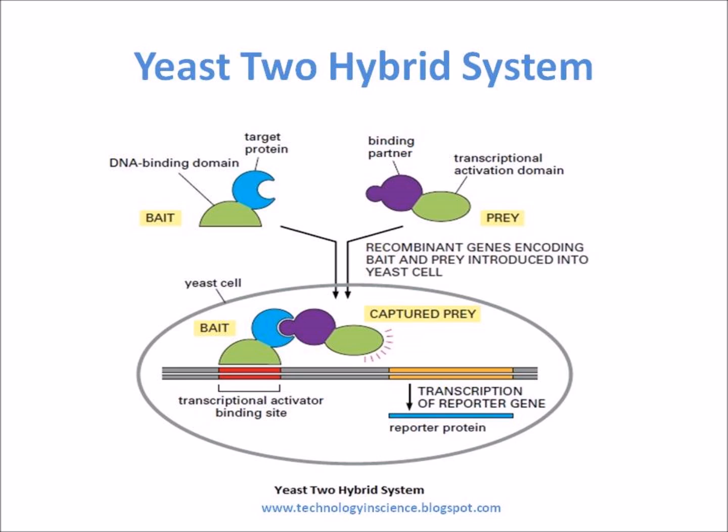The interaction of bait and prey will bring about the activation and expression of the reporter gene. The reporter gene is chosen in such a way that its expression will help the yeast cell grow on selective medium. Many potential binding partners can be prepared by ligating DNA encoding the activation domain of a gene activator protein to a large mixture of DNA fragments from a cDNA library. Cells that express this reporter are selected and grown, and the gene or gene fragment encoding the prey protein is retrieved and identified through nucleotide sequencing.